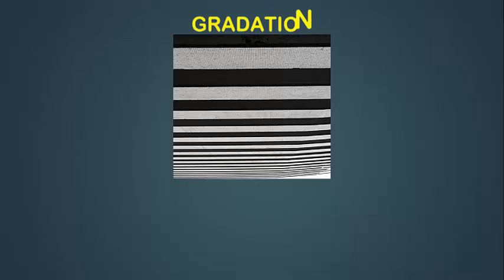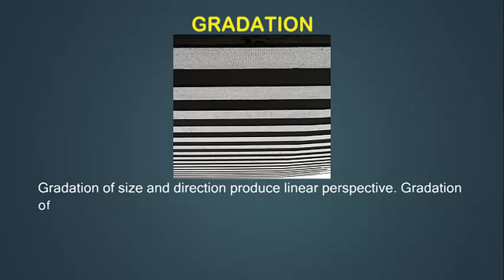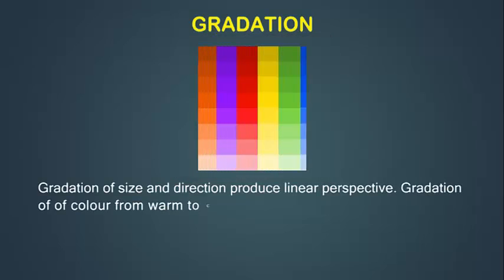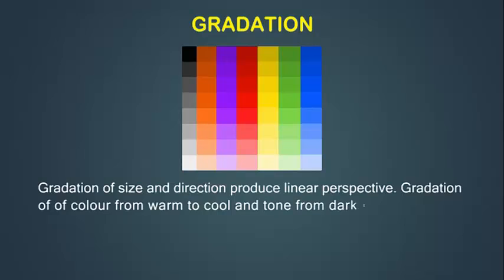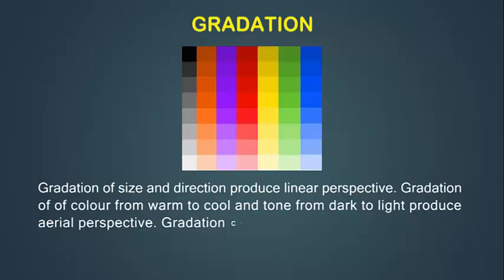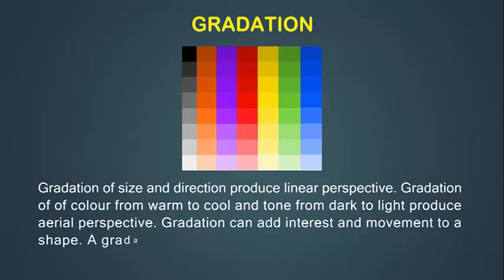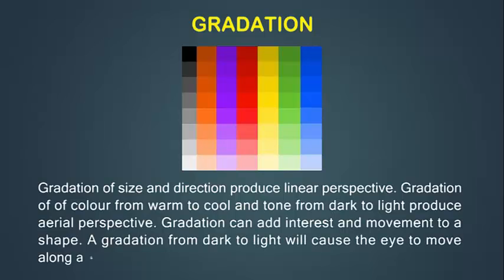Gradation of size and direction produce linear perspective. Gradation of color from warm to cool and tone from dark to light produce aerial perspective. Gradation can add interest and movement to a shape. Gradation from dark to light will cause the eye to move along a shape.